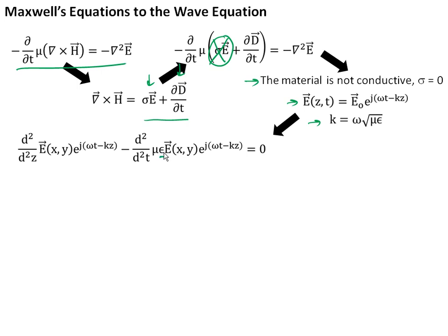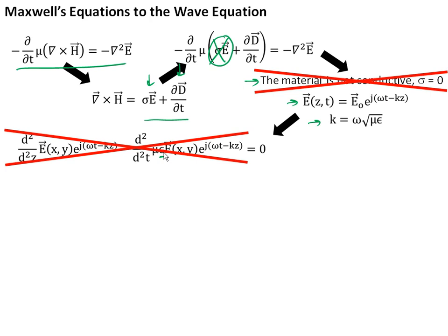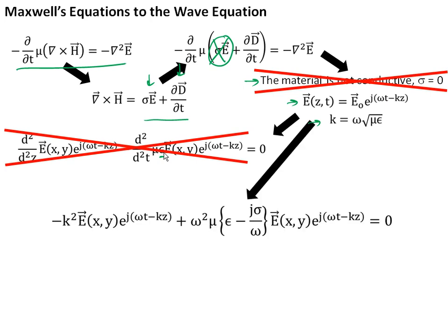Now we're going to throw away that assumption and say, to be more complete, let's include that materials do have conductivity and there are free charges that can conduct electricity. In this case, we keep the full conductivity term, which gives us a sigma and a complex term inside the equation that we'll use to describe our plane wave. This looks like a more complicated solution, but in fact it's not.